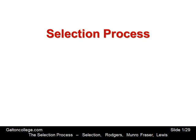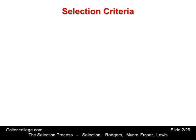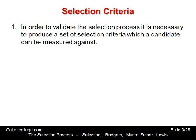In this particular class, we're going to look at selection criteria. In order to validate the selection process, it's necessary to produce a set of selection criteria which a candidate can be measured against. The process is not arbitrary, not discriminatory, not just made up. The process should be measured against a set of criteria, and these criteria should be articulated and made known to the candidates.